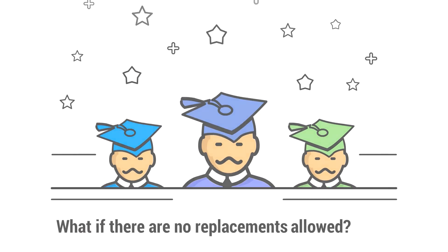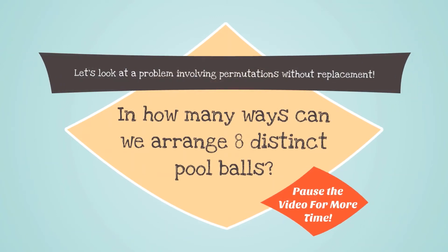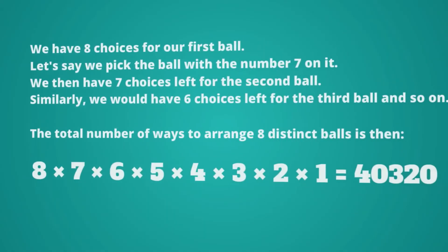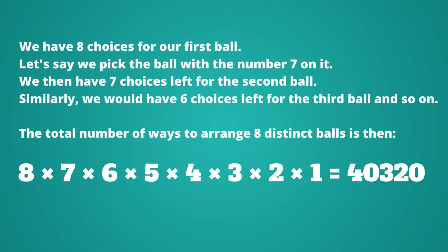What if there are no replacements allowed? Let's look at a problem involving permutations without replacement. How many ways can we arrange 8 distinct pool balls? We have 8 choices for our first ball. Let's say we pick the ball with the number 7 on it. We then have 7 choices left for the second ball, 6 choices left for the third ball, and so on. So the total number of ways to arrange 8 distinct balls is 8 times 7 times 6 times 5 times 4 times 3 times 2 times 1, which gives us 40,320 ways.